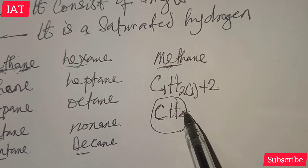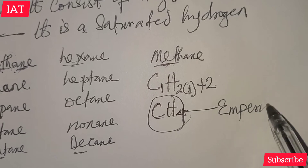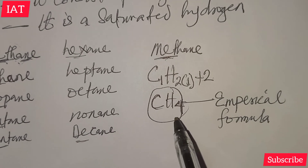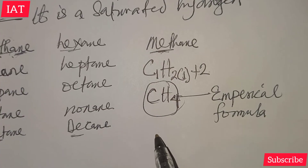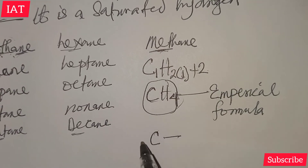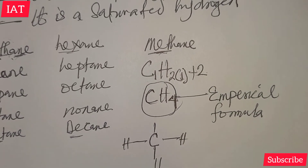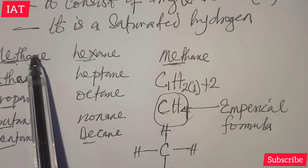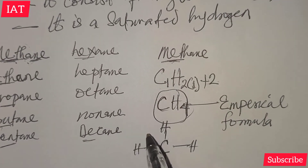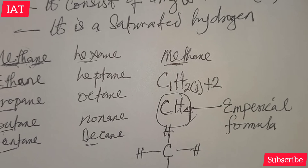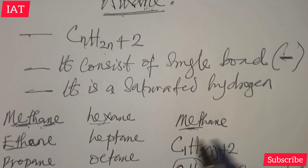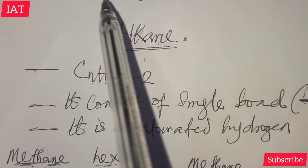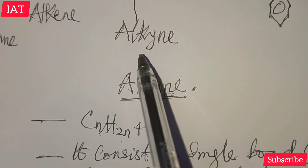From the empirical formula CH₄ — which is the simplest formula — we can get the structure of methane, and that is this carbon atom bonded with 4 hydrogen atoms. Methane has other chemical and physical properties, but that is not really our focus in this tutorial.